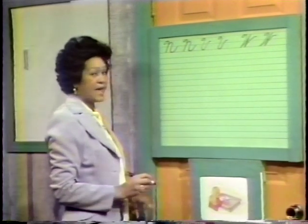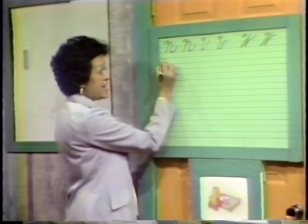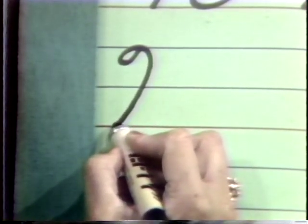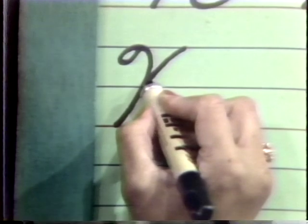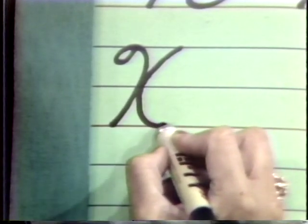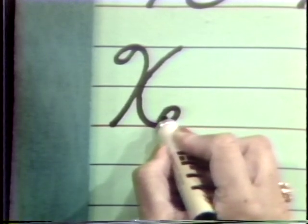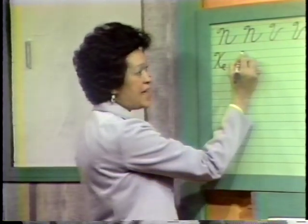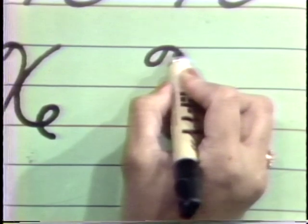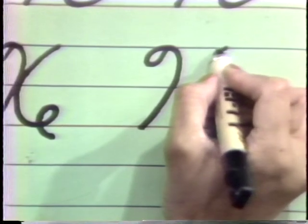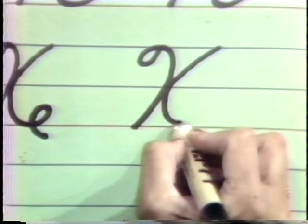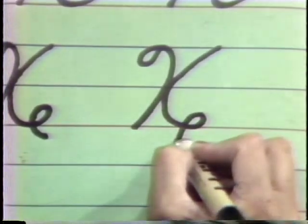The next letter is X. Again, you have a slanted vertical loop and it starts at the headline. Come all the way down and I'm going to stop here. I'm going back to the headline, coming around, connecting it right there, and I'm going to make another loop right here, closing at the baseline and come down slightly. X. A slanted vertical loop, starting at the headline, stopping at the baseline, go back up to your headline, coming around, forming a loop at your baseline and come down. X.